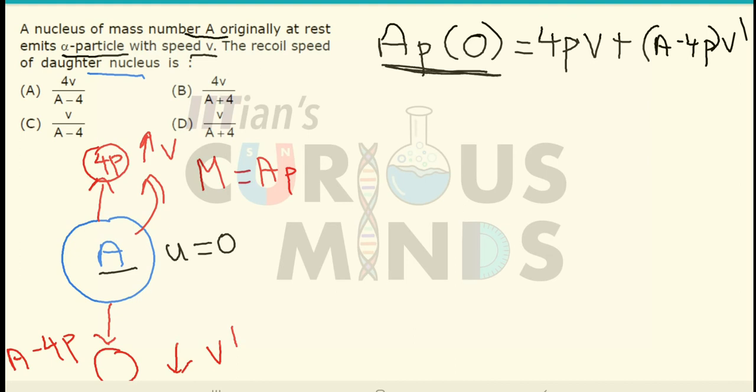Now this part is anyway equal to 0. So I can write this as minus 4P into V. It will be equal to A minus 4P into V dash.